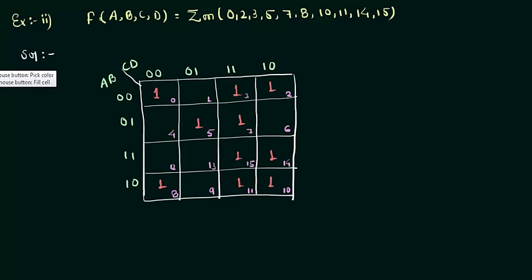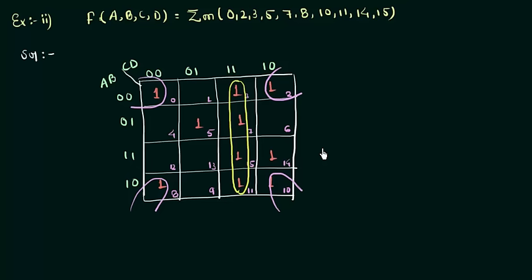Now the next step is to pair them. The largest pair that I can see is the pair of these four ones. Now after this, you can pair these four ones—this one, this one, and these two ones. So this is your second prime implicant. This one was your first prime implicant. Now we are left with this one and this one.